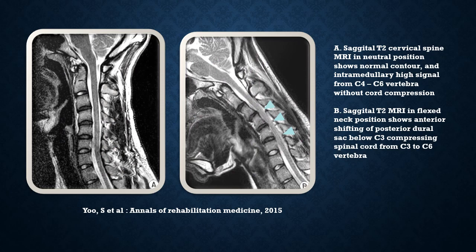Image A shows a sagittal T2 cervical spine MRI in the neutral position, showing a normal contour of the spinal cord and intramedullary high signal from C4 to C6 vertebra without cord compression. Image B shows a sagittal T2 MRI in the flexed neck position, showing anterior shifting of the posterior dural sac below C3, compressing the spinal cord from C3 to C6 vertebra. This is from Yu et al., Annals of Rehabilitation Medicine, 2015.